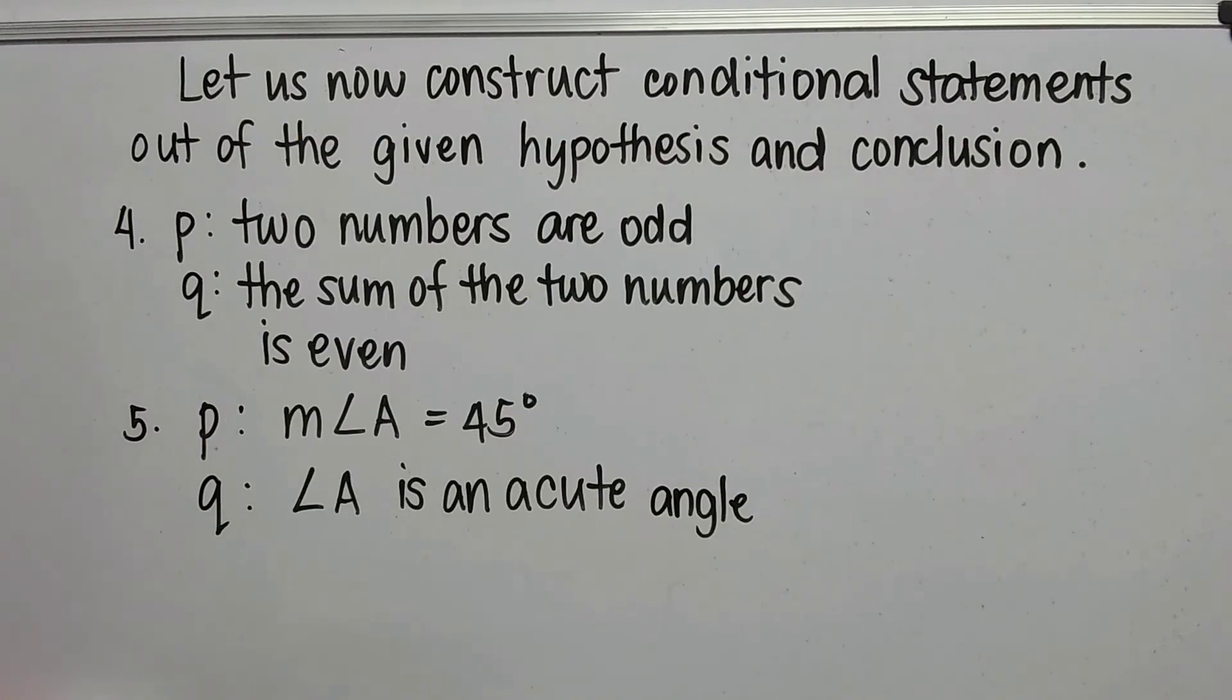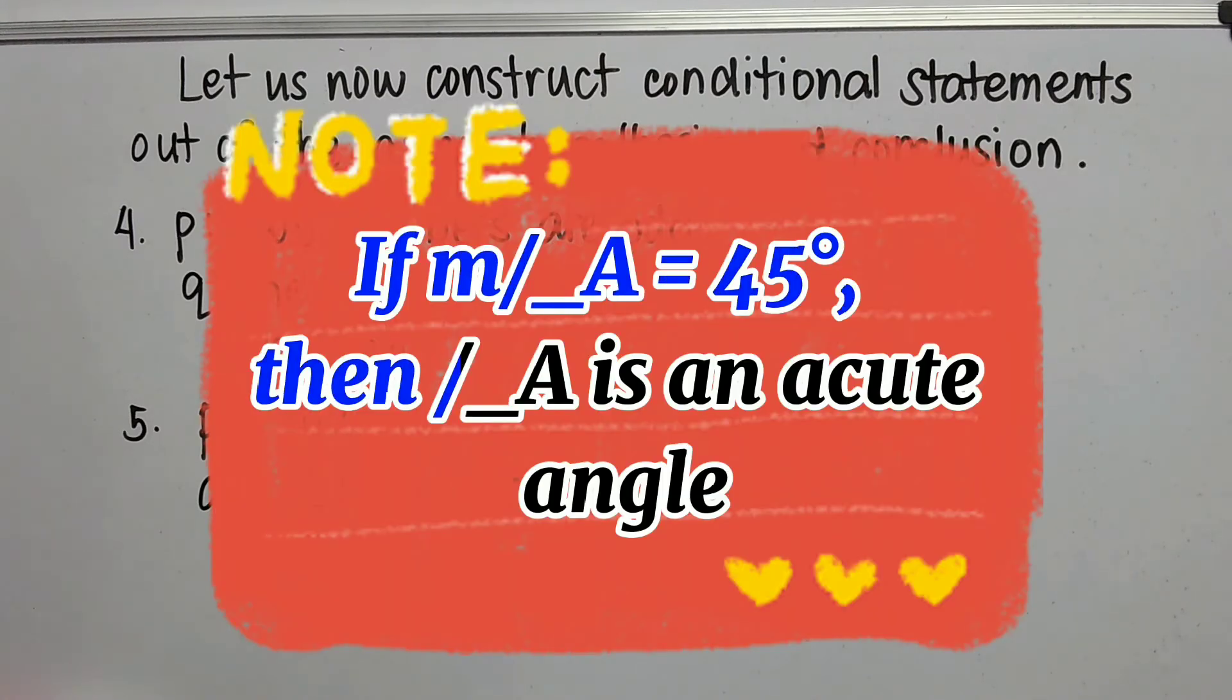Number five. P: measure of angle A is 45 degrees. Q: angle A is an acute angle. The if-then statement: if measure of angle A is 45 degrees, then angle A is an acute angle.